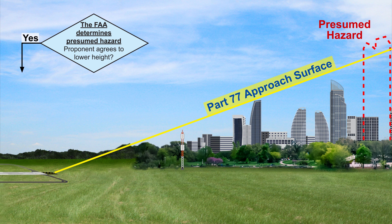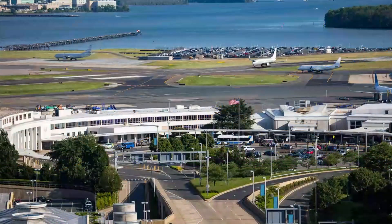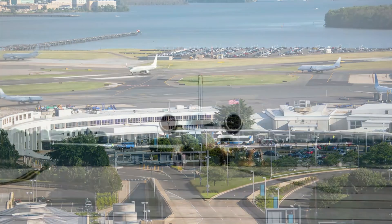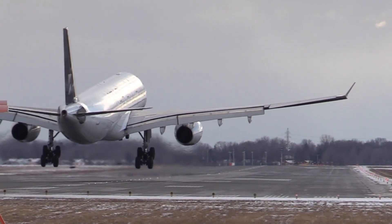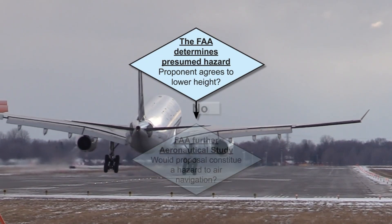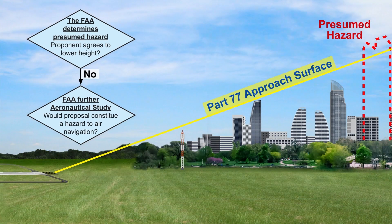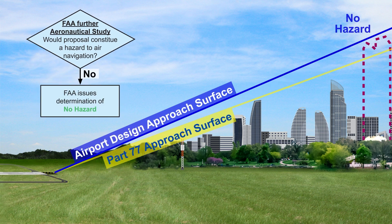However, if the proponent does not accept any of the proposed mitigations, the FAA then performs a detailed aeronautical study to assess whether the presumed hazard is a hazard to air navigation. The detailed FAA study analyzes potential impacts to airport capacity, safety, and utility, which includes impacts to takeoff and landing operations. If the FAA's aeronautical study determines the presumed hazard is not a hazard, the FAA issues a determination of no hazard.